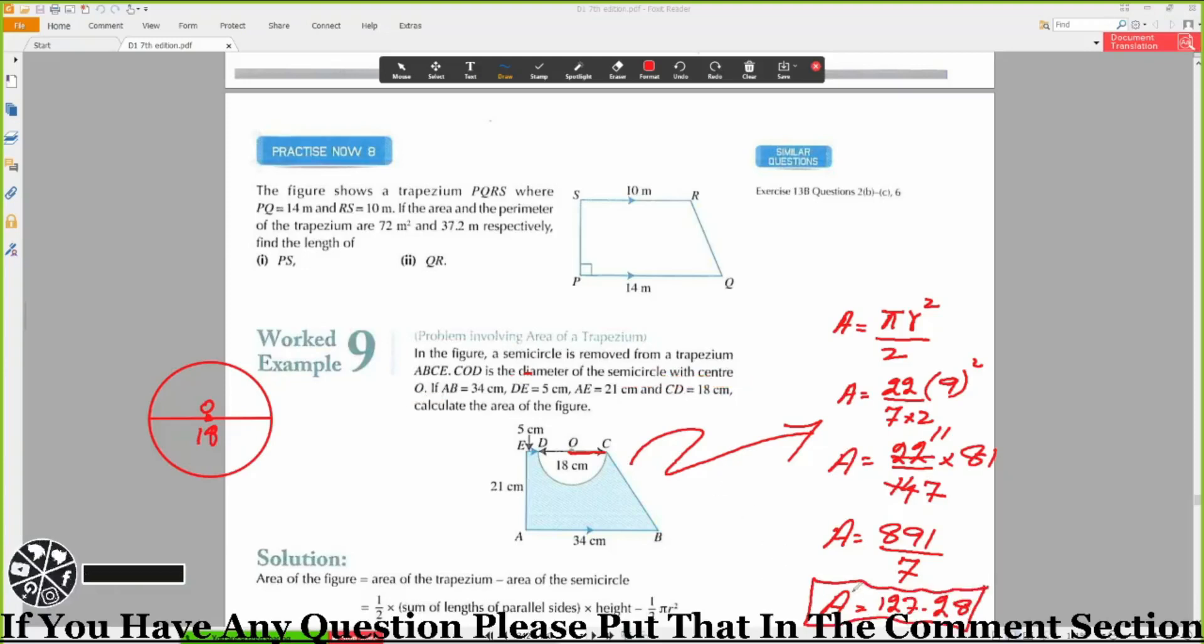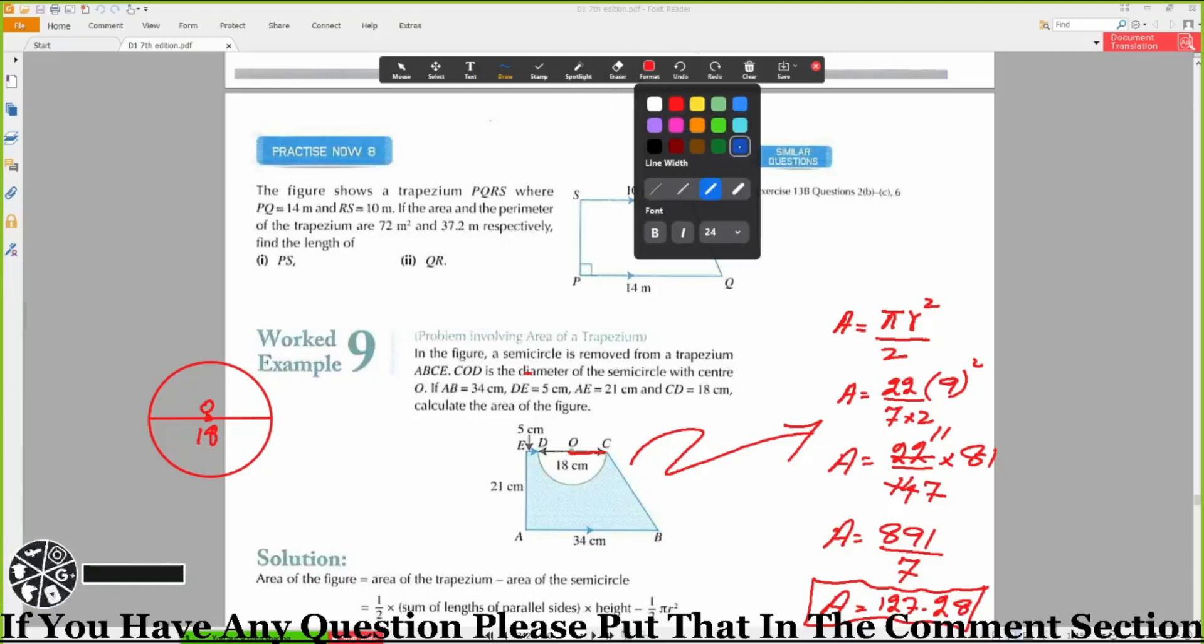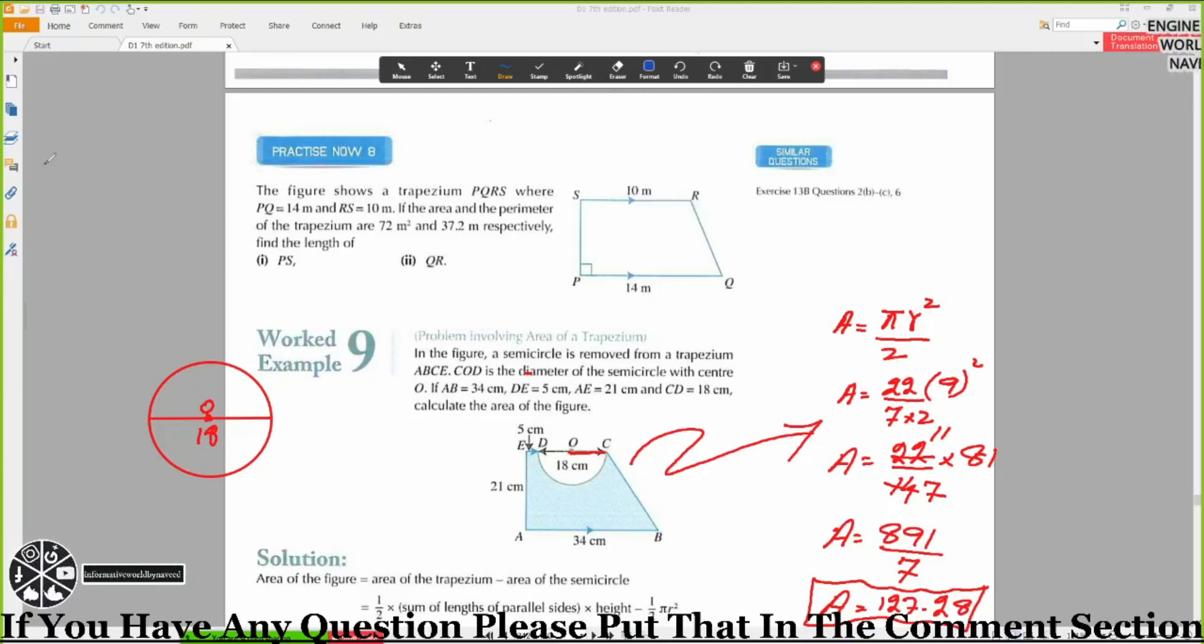This is the area of the semicircle. Now I need to find the area of the trapezium. The formula for finding the area of the trapezium is equal to half times height. Height is 21.